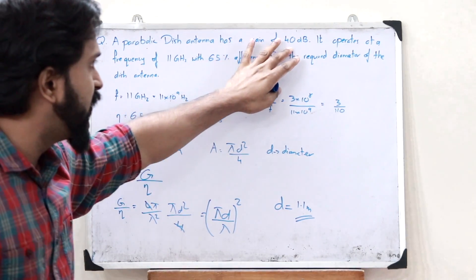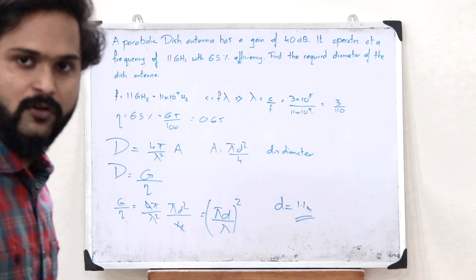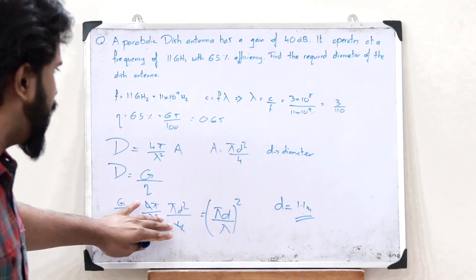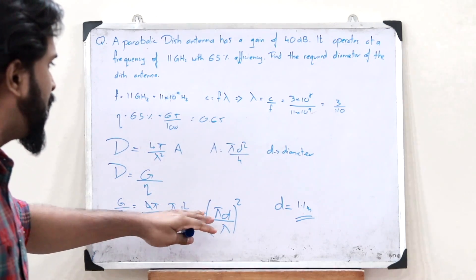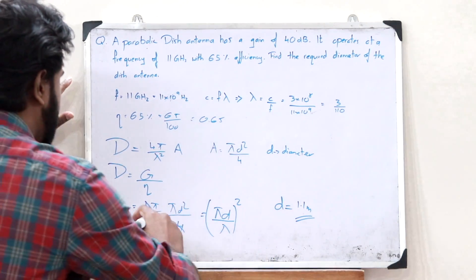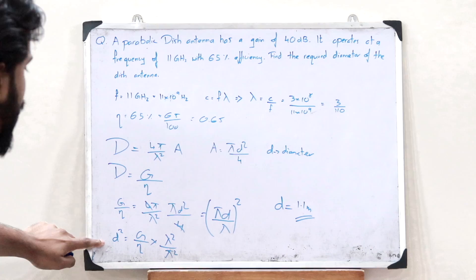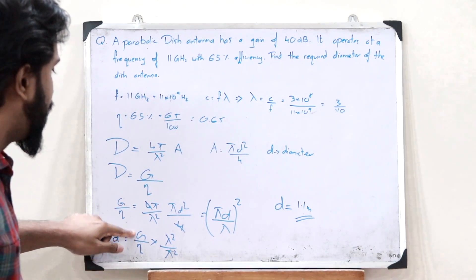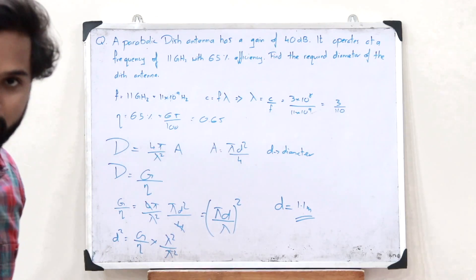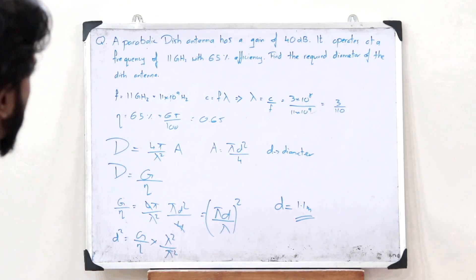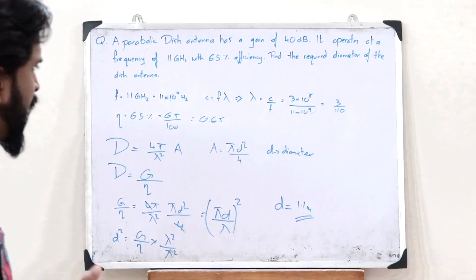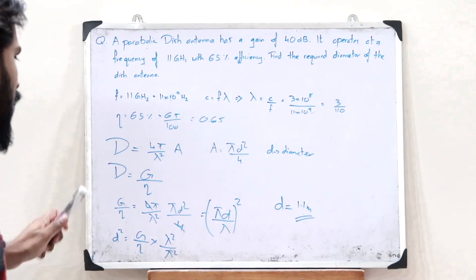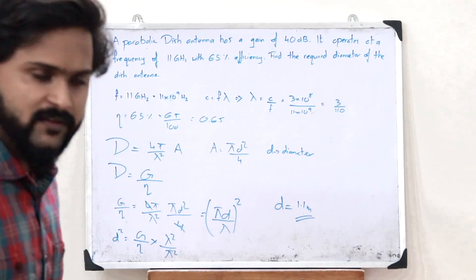One important thing to keep in mind: the gain is given in decibels, so you must convert it to a linear (normal) value before substituting. Once you do that and substitute all parameters, you'll get d² equal to a certain value, and simply taking the square root gives d = 1.1 meters. It's basically simple substitution — all you need to know are the correct formulas.